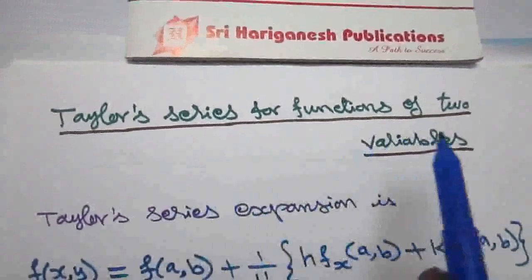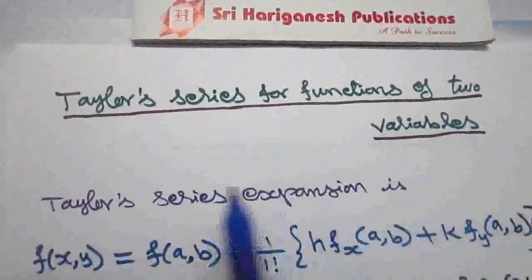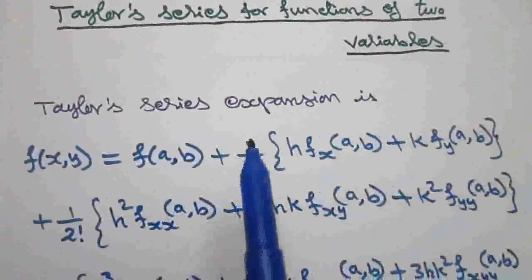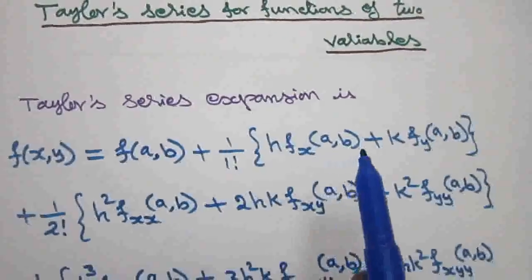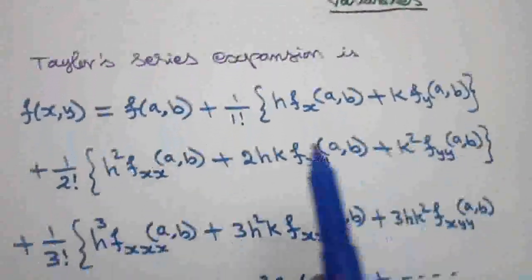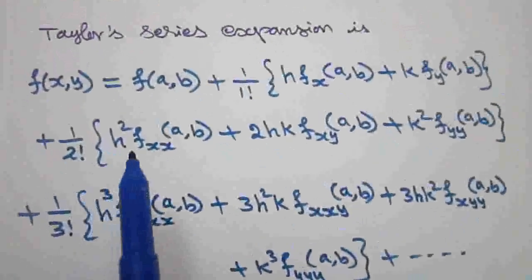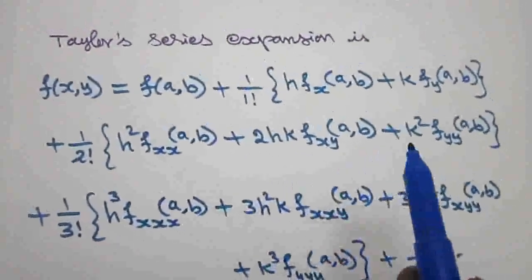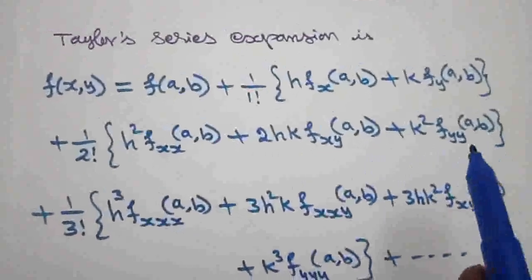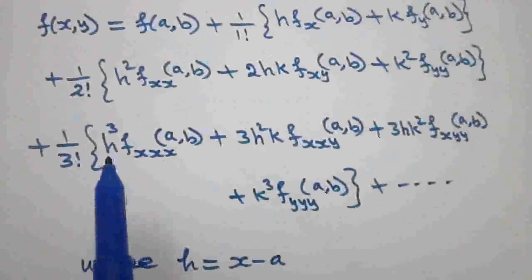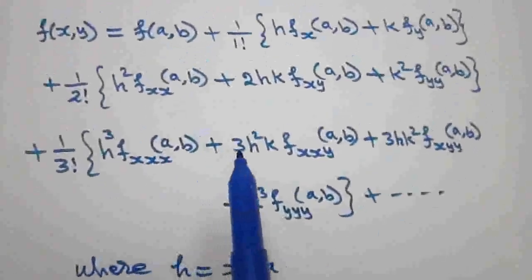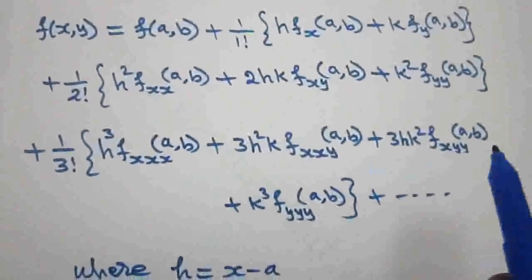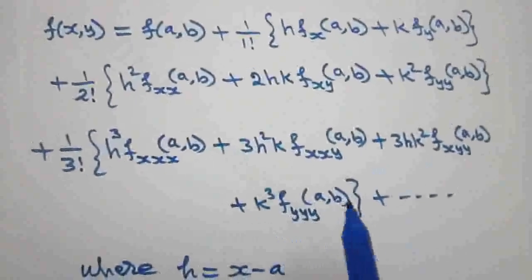Taylor series for a function of two variables. The Taylor series expansion is: f(x,y) = f(a,b) + (1/1!) × [h·fx(a,b) + k·fy(a,b)] + (1/2!) × [h²·fxx(a,b) + 2hk·fxy(a,b) + k²·fyy(a,b)] + (1/3!) × [h³·fxxx(a,b) + 3h²k·fxxy(a,b) + 3hk²·fxyy(a,b) + k³·fyyy(a,b)] + ...